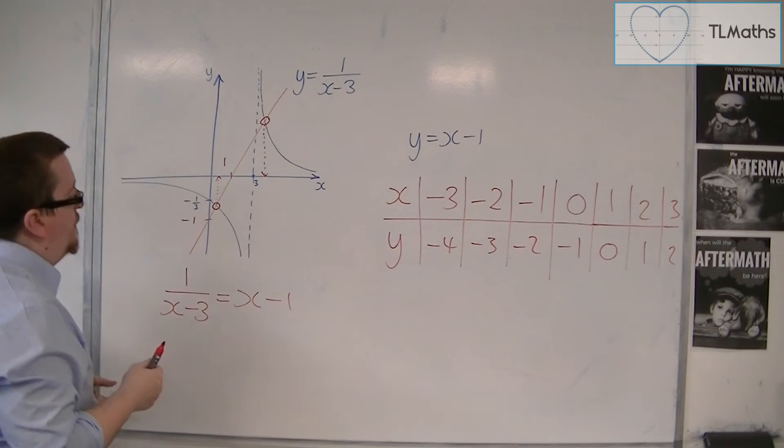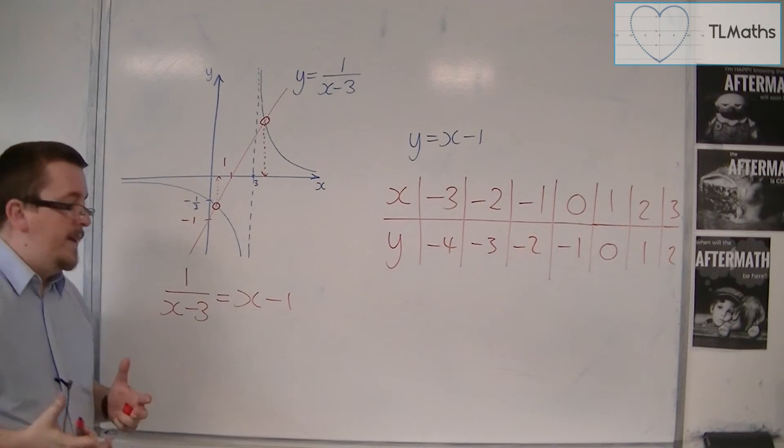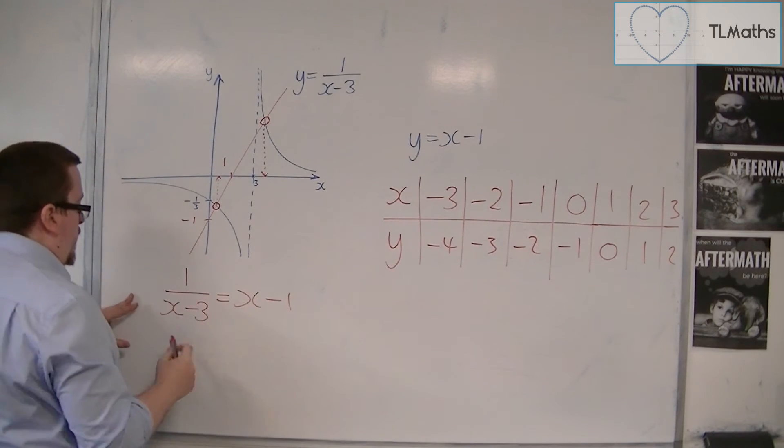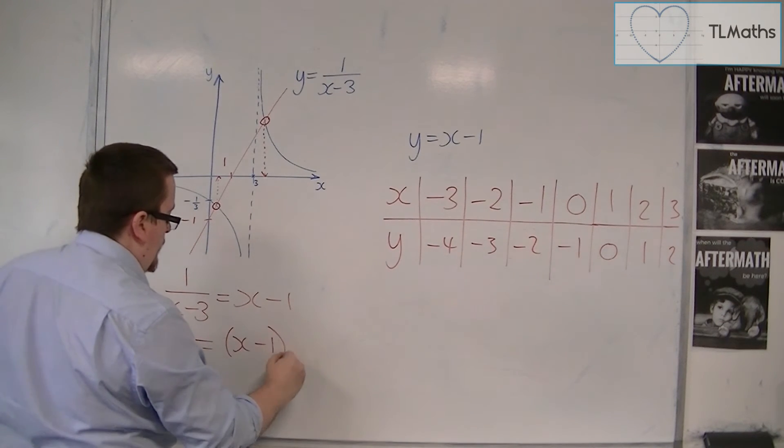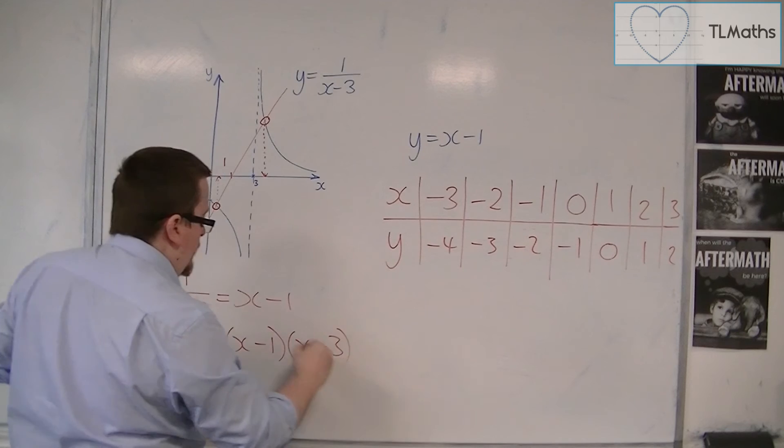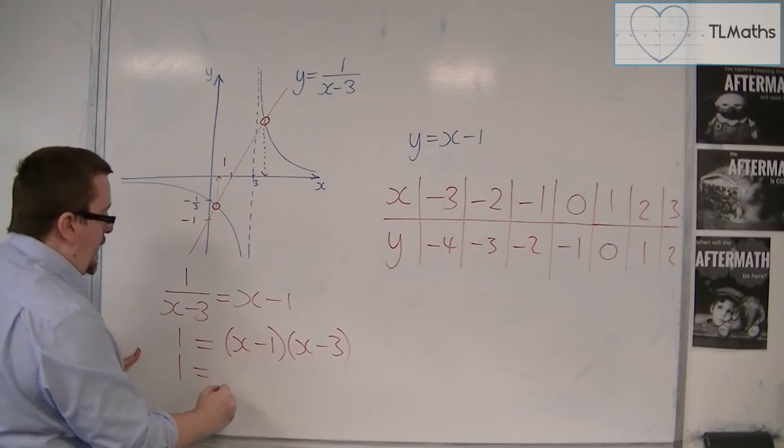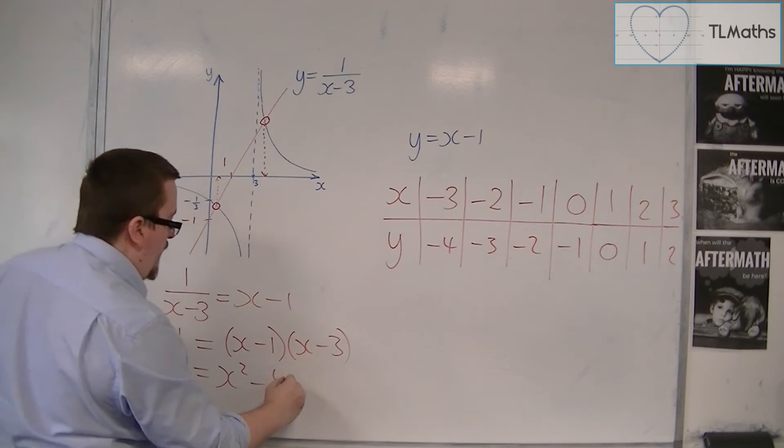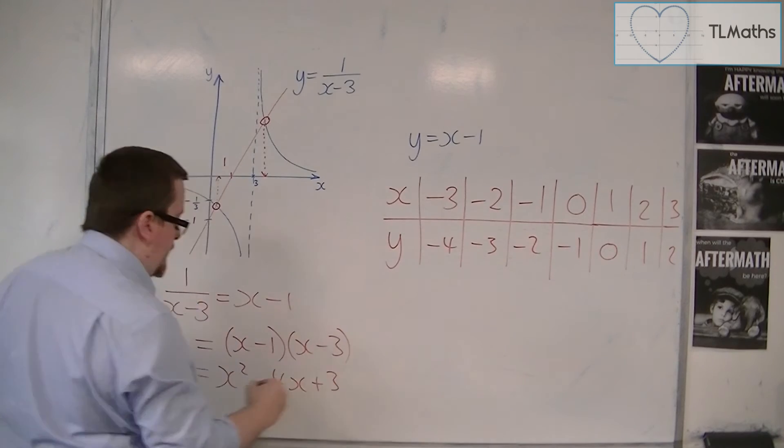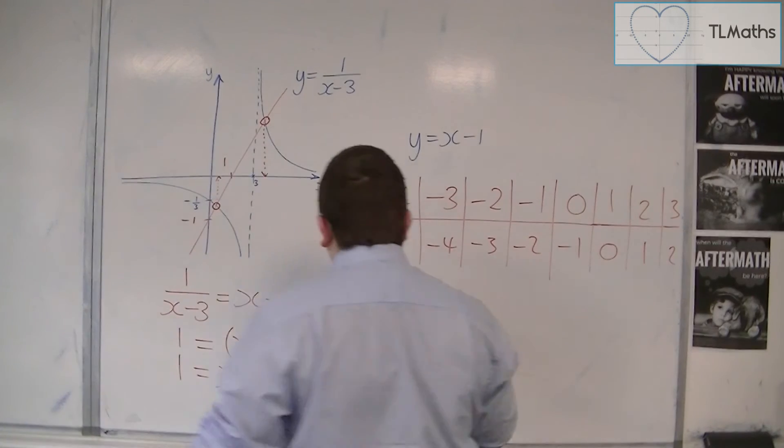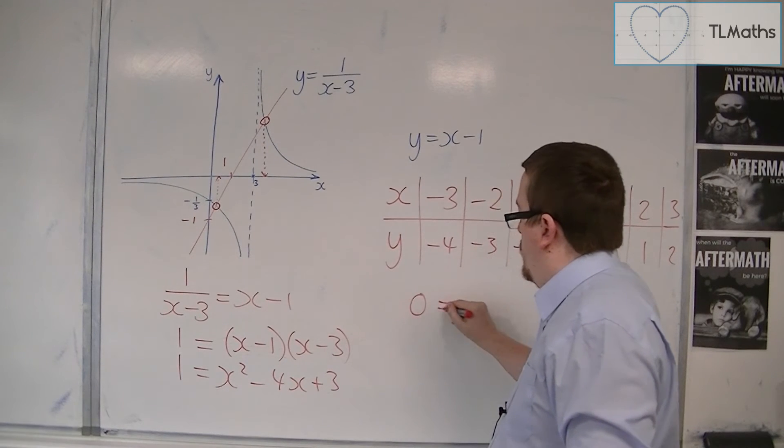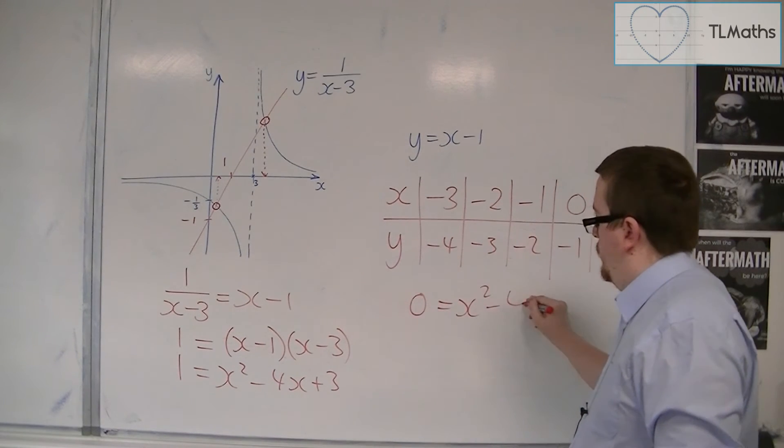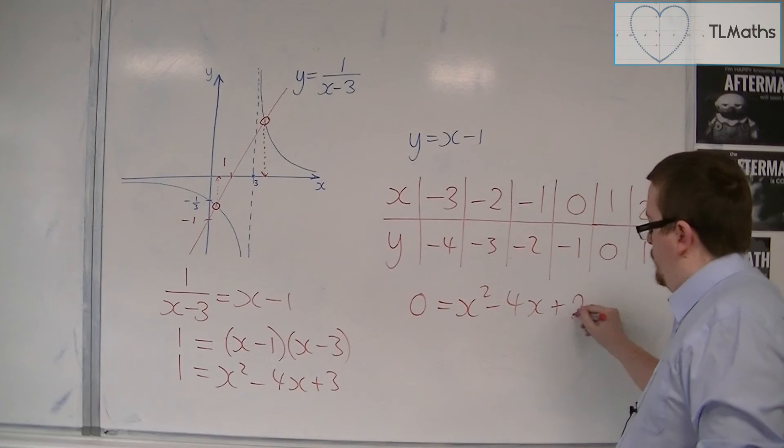Because we know that intersection means simultaneous equations. So algebraically, we're looking at estimates of the solution to this equation. And you can read them off from your graph. So if I was going to do this algebraically, then I would multiply both sides by x minus 3. I would then have to expand the brackets. So x squared minus 4x plus 3. I would then have to take 1 from both sides.